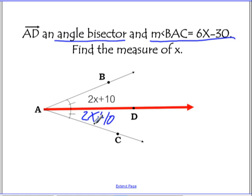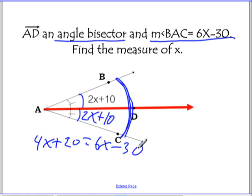So now because we're told that angle BAC, which is this whole big angle, is 6x minus 30, we can use angle addition and say that this angle plus this angle must equal the whole thing. So that 2x plus 10 plus 2x plus 10, which is 4x plus 20, must be equal to 6x minus 30. And so that's the equation we can use to solve it.